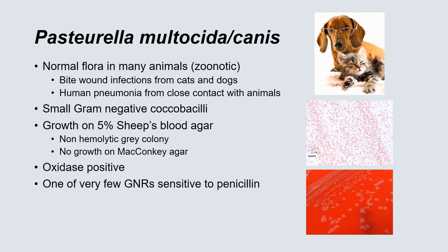Pasteurella multocida canis is normal flora in many animals and is considered a zoonotic infection — mostly bite wound infections from cats and dogs. You can also acquire a human pneumonia from inhaling their secretions. It is a small gram-negative coccobacillus that grows very well on 5% sheep's blood agar as a non-hemolytic gray colony. It is oxidase positive and is one of the very few gram-negative rods that is sensitive to penicillin.